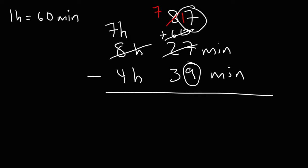17 minus 9, that's going to give us 8. And then 7 minus 3 will give us 4. So 87 minus 39 gives us 48 minutes.